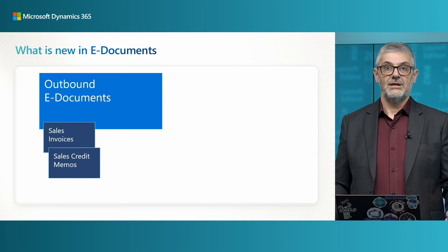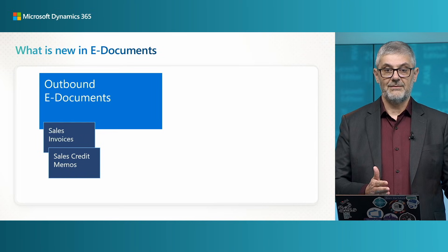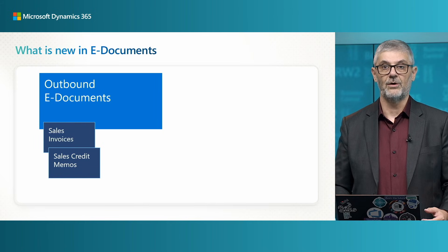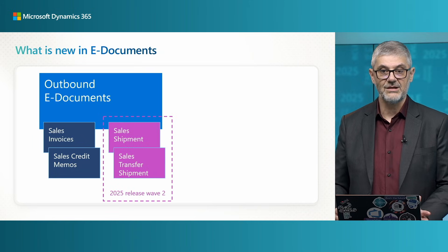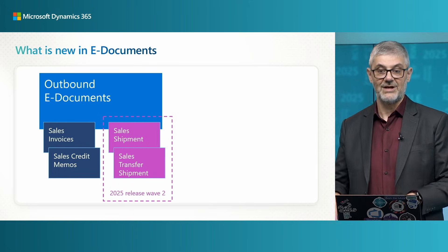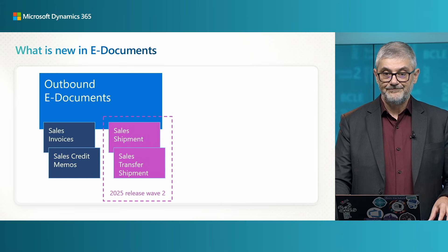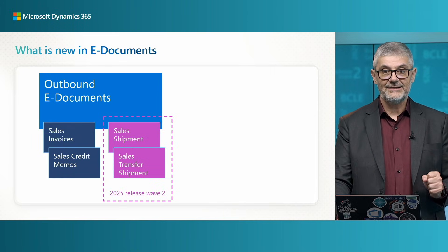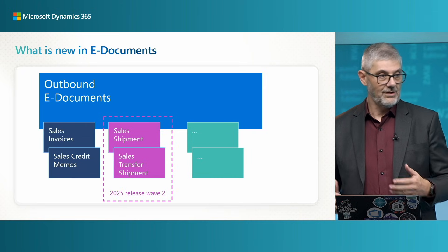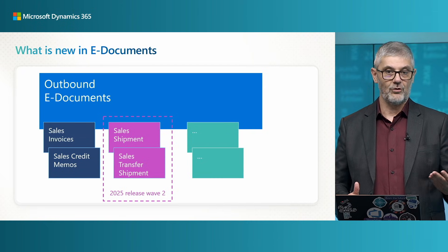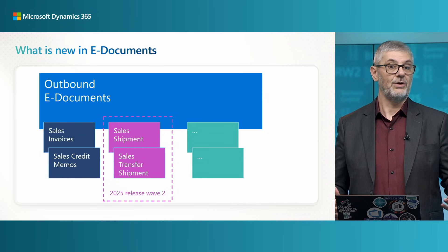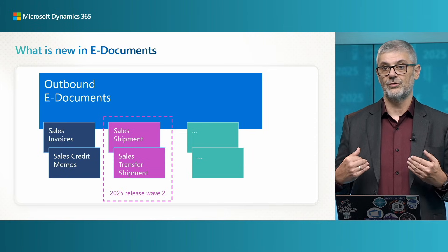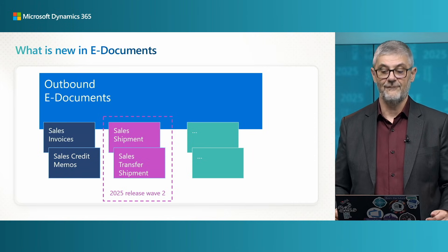What is new in e-documents in this release: previously in outbound e-documents we had sales invoices and sales credit memos. With this release we extended it to sales shipments and transfer shipments as well. Both are available in this release, and it opens a door for extending this further, as we now have a new document type. We will likely have more and more document types in the future, depending on regulatory requirements and other business reasons, both for us to introduce and for you to build on top of.